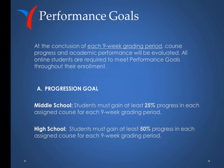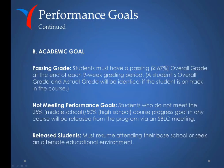At the conclusion of each 9-week grading period, course progress and academic performance will be evaluated. All online students are required to meet performance goals throughout their enrollment. For middle school, students must gain at least 25% progress in each assigned course per 9-week grading period. For high school, students must gain at least 50% progress in each assigned course per 9-week grading period. Students must also have a passing grade greater than or equal to 67% overall at the end of each 9-week grading period.